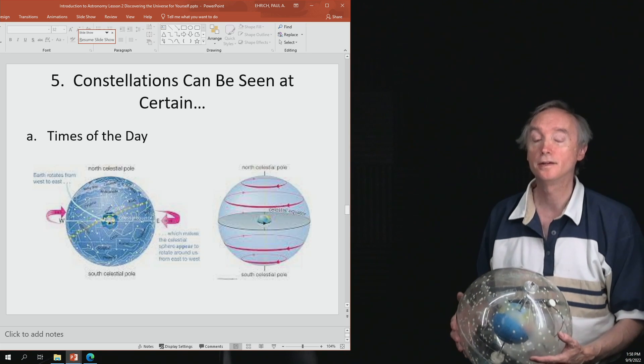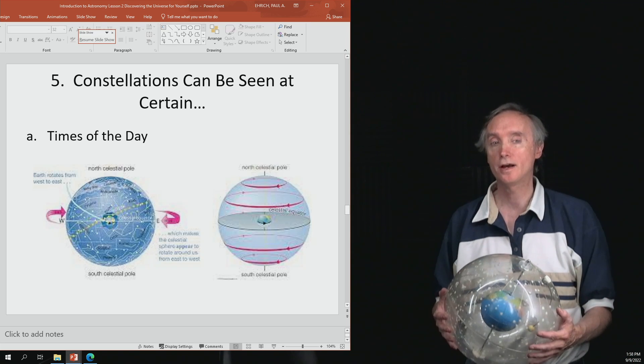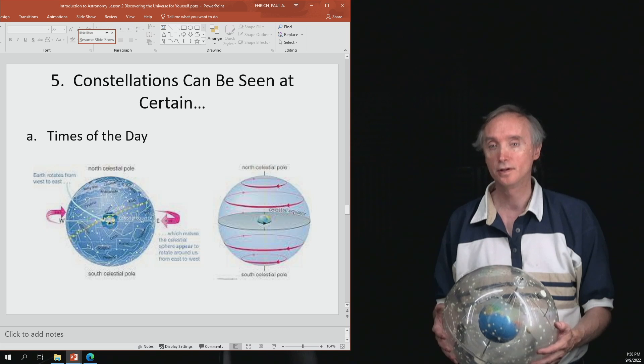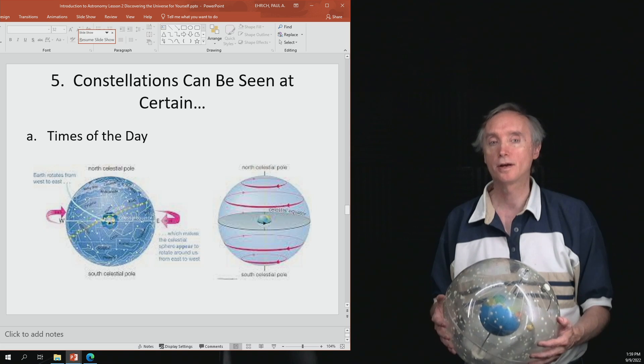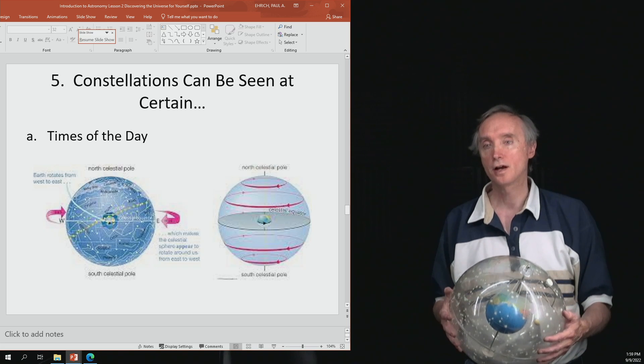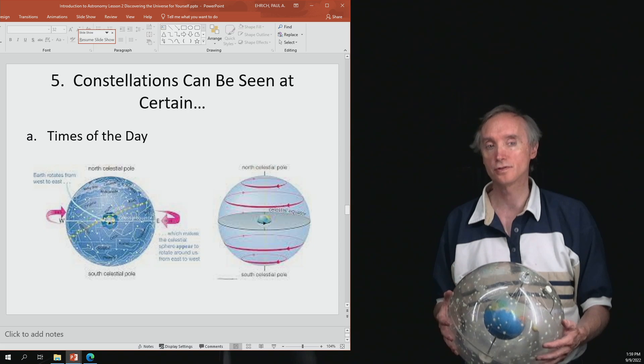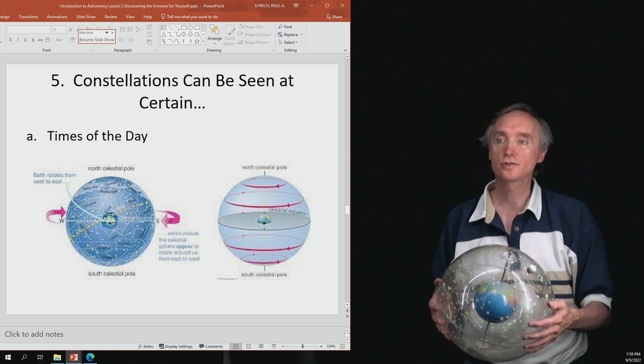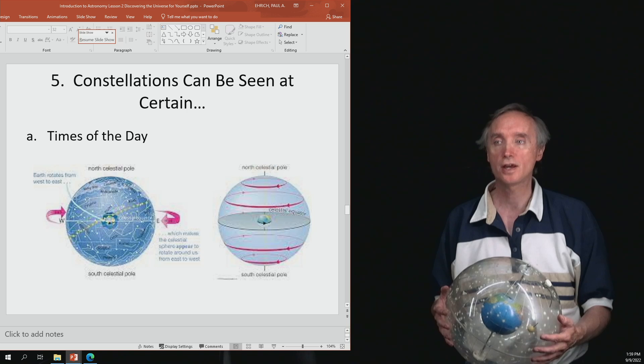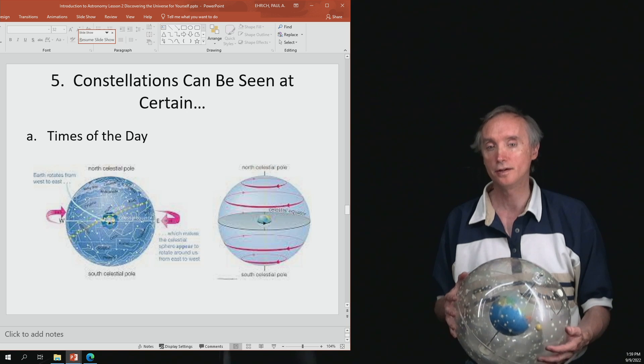Okay, I'm back. In the previous segment, we were talking about how to locate constellations. Now we want to talk about how the position of the constellations in the sky changes. The first thing is how does it change depending on the time of day?